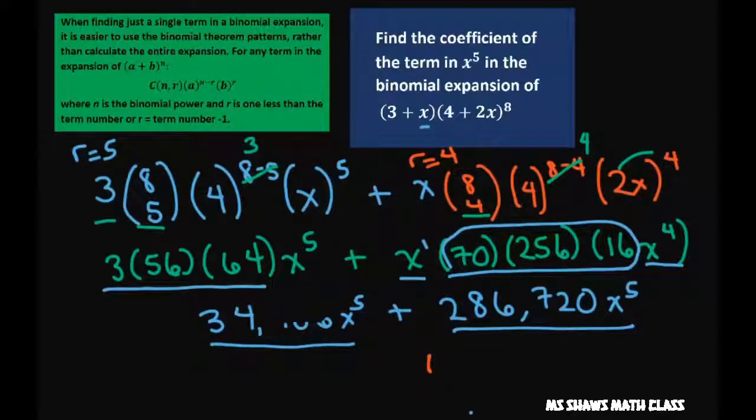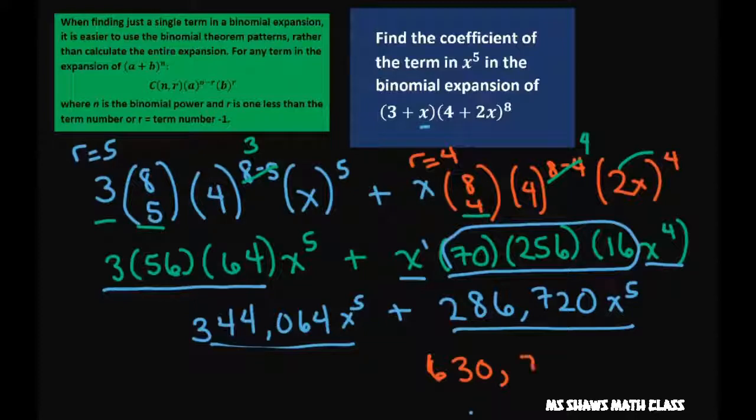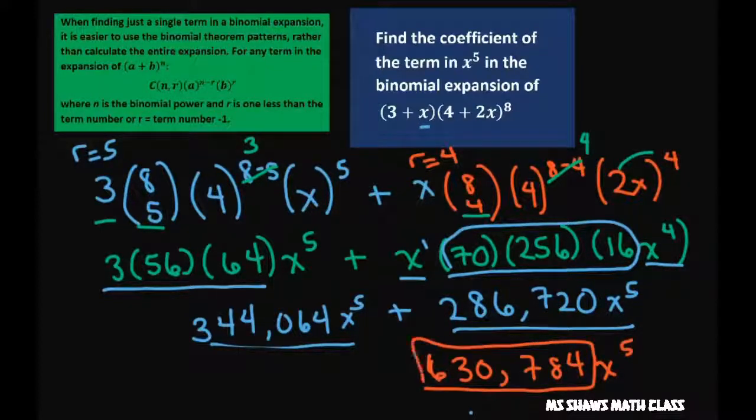I think I wrote this one down wrong, so let me just write this down right again. So this is 344,064 like that. And so when you add those up, you get 630,784 x to the fifth. And they just want the coefficient, so you're only going to write this down. And that's it. Thank you, have a nice day, bye-bye.